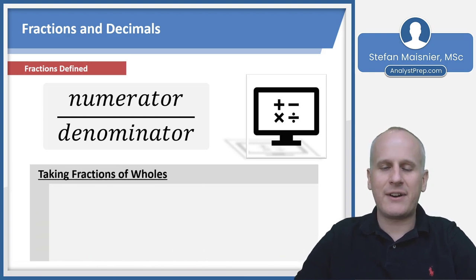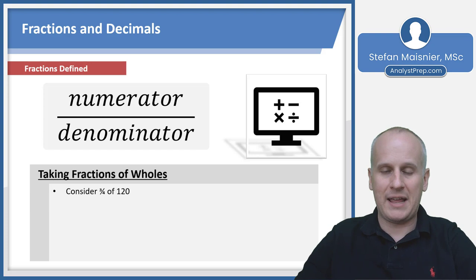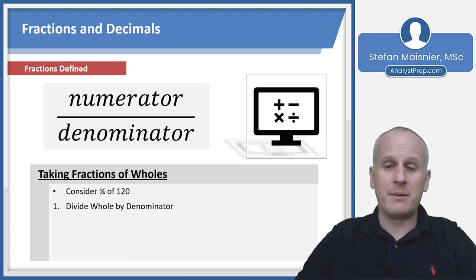Taking fractions of wholes is one of the fastest ways to improve your speed on this exam. For three quarters of 120, most people will multiply straight across, but we can do this faster. We know that multiplication and division are the same level in order of operations, so instead of multiplying, keep the numbers smaller by dividing your whole by the denominator.